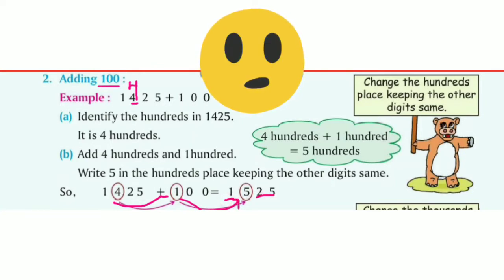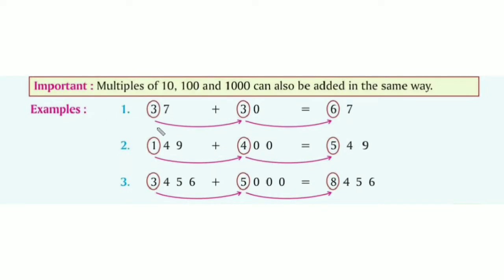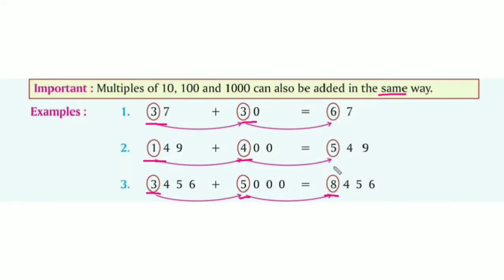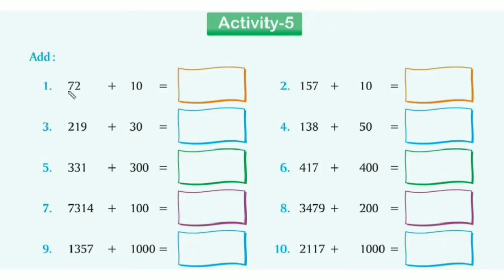Therefore, 1425 plus 100 equals 1525. The addition of thousands is the same as the addition of tens and hundreds. In the first example we are adding tens, in the second we are adding hundreds only, and in the last example we are adding thousands: 3000 plus 5000 equals 8000. We are simply changing the thousands digit only, just as we do when adding tens and hundreds.